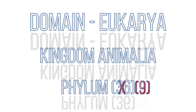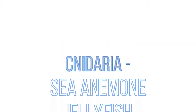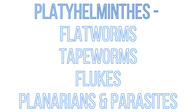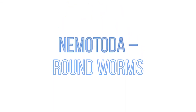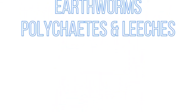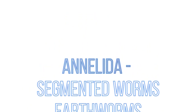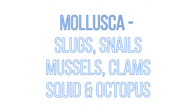We're going to create a series of videos going through each of these individually. First, the phylum known as Porifera — different types of sponges. Then Cnidaria: sea anemone, jellyfish, corals, and hydras. Then Platyhelminthes, which covers flatworms, tapeworms, flukes, and other parasites. Then Nematoda — roundworms. Followed by Annelida — segmented worms, earthworms, polychaetes, and leeches. Then the phylum Mollusca: slugs, snails, mussels, clams, and squids and octopus as well.